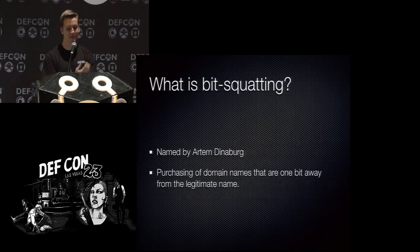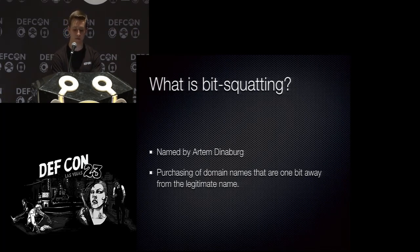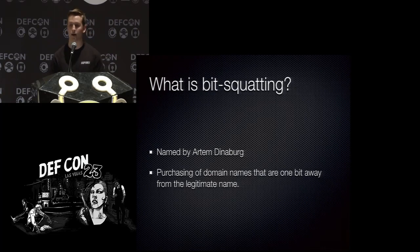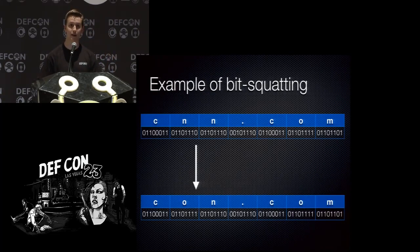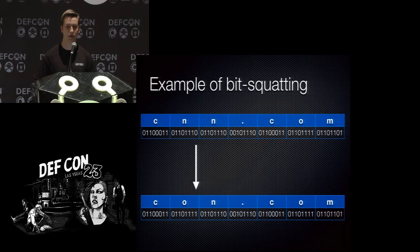So what is bit squatting? Bit squatting was a term coined by Artem Dinaburg. It refers to a specific exploitation of bit flips via purchasing domains that are one bit away from a legitimate domain, in the hopes that a bit flip will occur and the user's traffic will be directed to your domain instead. For example, take CNN.com — if the last zero in one of the Ns flips from a zero to a one, it changes to con.com. Normally these domains aren't registered, so the request fails silently. The idea with a bit squat is to purchase these domains instead.